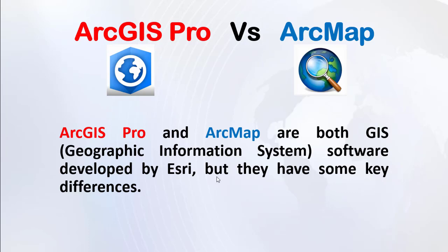ArcGIS Pro and ArcMap are both GIS (Geographic Information System) software developed by ESRI, but they have some key differences.